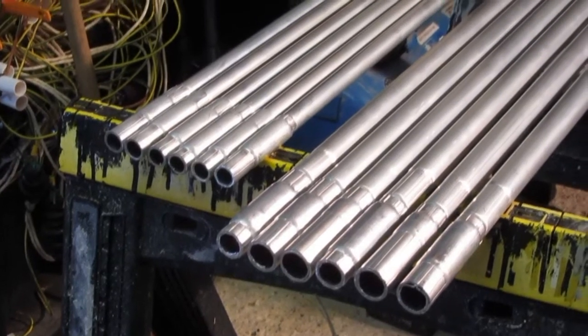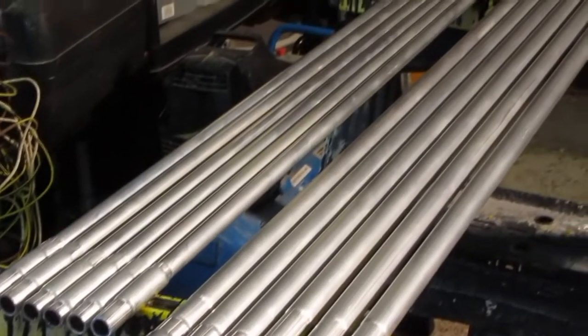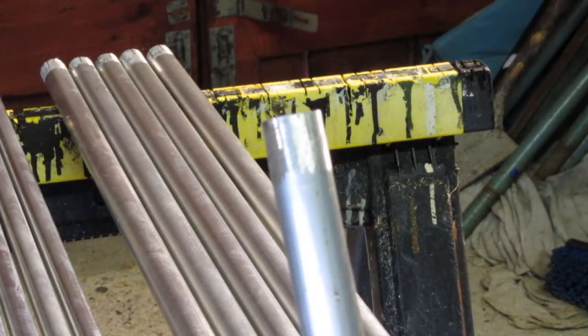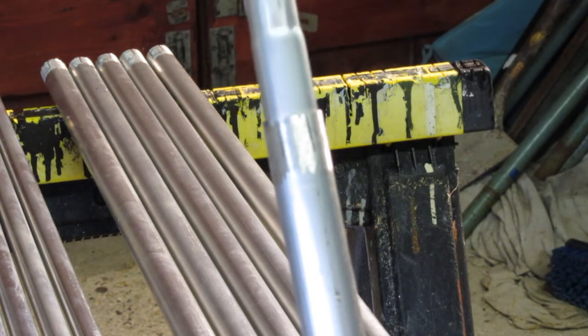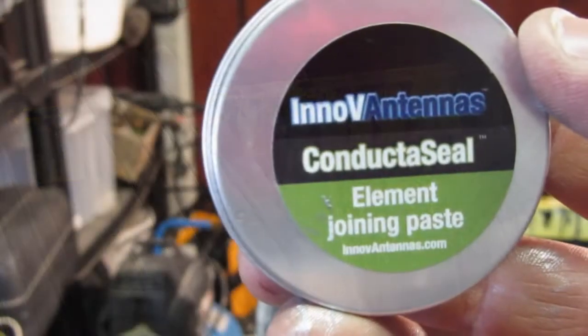The next sections of the elements are all the same length. These have a sleeve mechanically pressed onto it that slides into the adjoining tube. Conductive jointing paste on all joints.